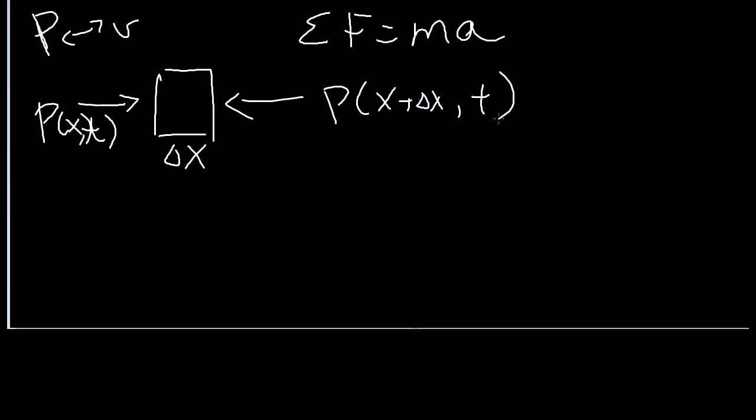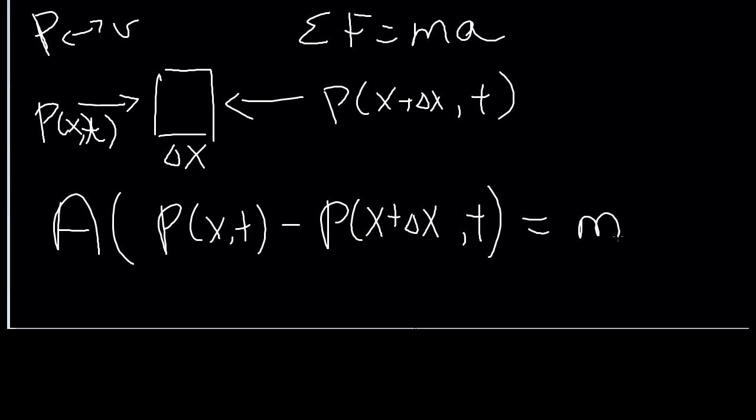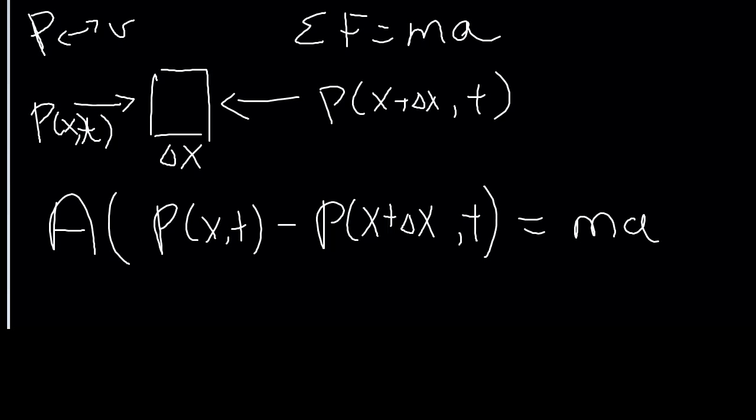Summing up forces, pressure times area gets you a force. P(x,t) minus P(x plus delta x, t) is equal to MA. And MA, we can expand a little bit more. Once again, with a couple of approximations. First off, we're going to say that because our change in density is much, much smaller than the background, we'll just approximate the mass as having the background density.